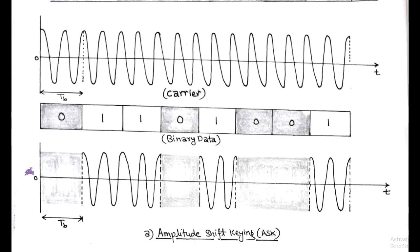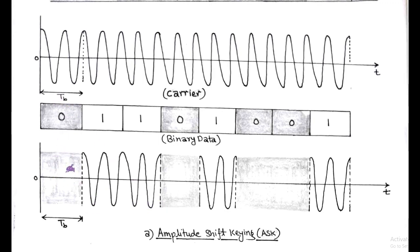First is Amplitude Shift Keying. In ASK, the amplitude of the carrier is switched according to symbol 0 or symbol 1. Commonly in ASK, one of the amplitudes is 0. For example, symbol 1 is represented by the presence of the carrier at constant amplitude, and symbol 0 is represented by the absence of the carrier. The resulting transmitted ASK signal is shown in the figure.